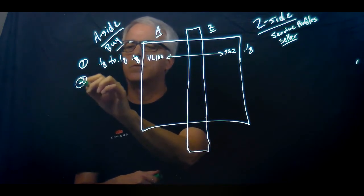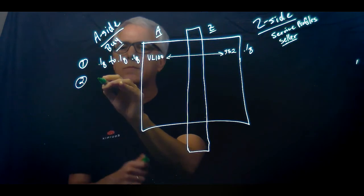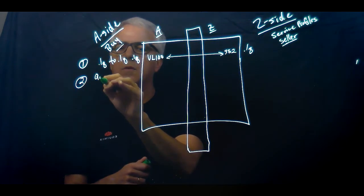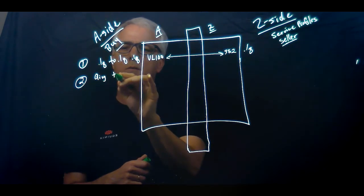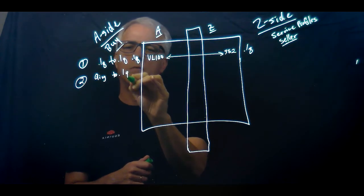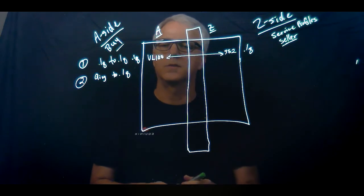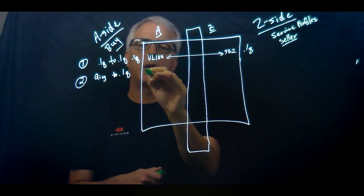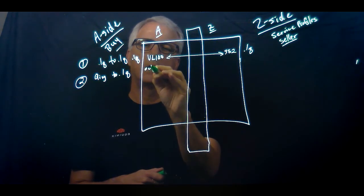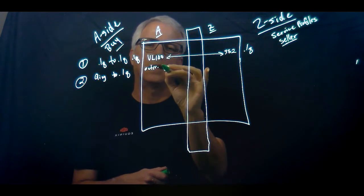So scenario 2 is Q-in-Q to .1Q. And Q-in-Q is VLAN tunneling, without the name for it. Outer, inner tag is what it uses. So I've got an outer tag and an inner tag.